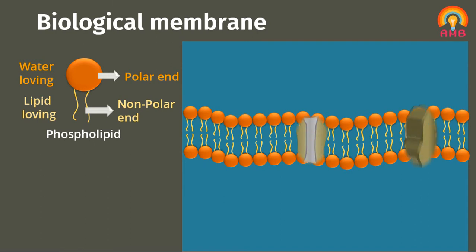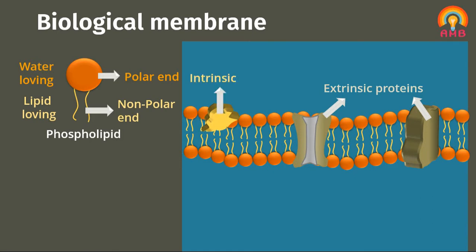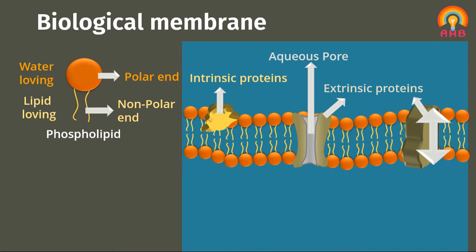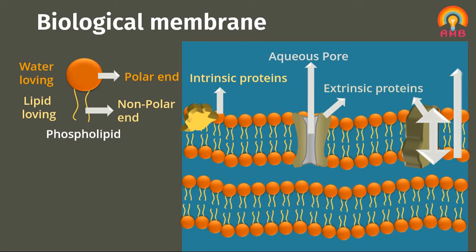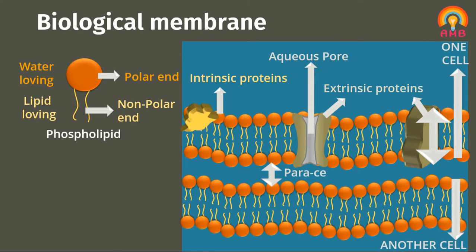Extrinsic and intrinsic protein molecules are embedded in this bilayer. Extrinsic proteins span the full thickness of the membrane and surround fine aqueous pores, while intrinsic protein floats in the bilayer of phospholipids and continuously changes its position. Paracellular spaces or channels also exist between adjacent cells.